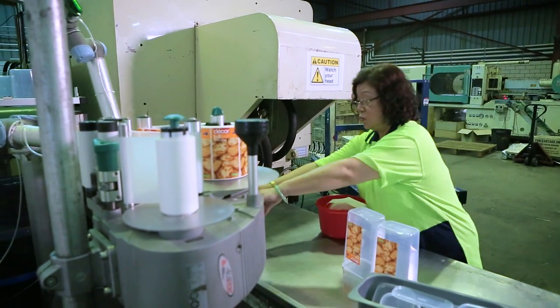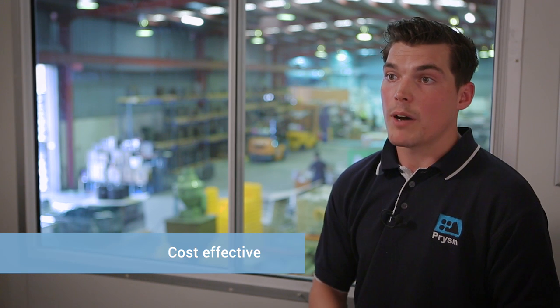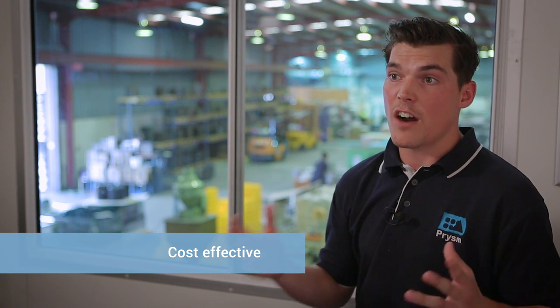Since we've implemented the UR5, we've seen better product consistency, specifically in the label. It's also freed up our operators to operate more machinery, and by doing that we're saving around about $500 a day, which has led to paying back the robot within 12 months.